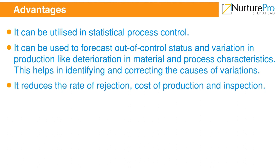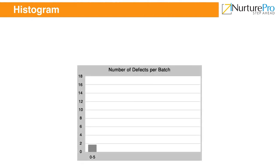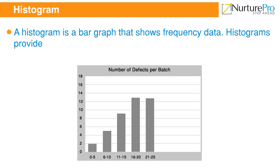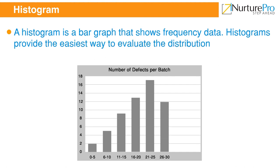Histograms are another graphical representation in which measurements are grouped into bars. Each bar depicts a range of values of some parameter. Histograms measure frequency distribution of data by mean. If the distribution is normal, the graph is a bell-shaped curve. If the distribution is not normal, the graph can take various shapes.